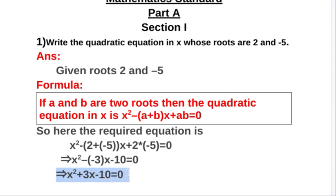So this is the answer, the quadratic equation: x² plus 3x minus 10 equal to 0.